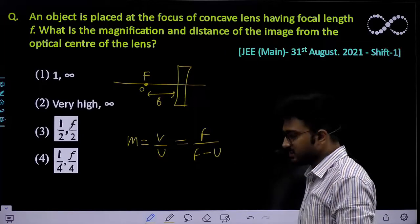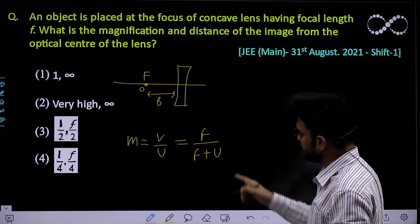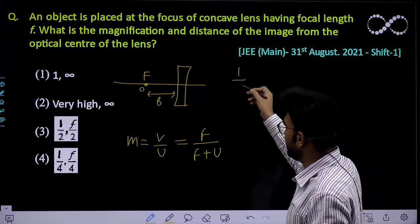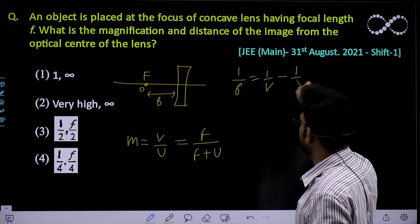We also know the lens equation: 1/f = 1/v - 1/u. Using these relationships, we can easily find the magnification value.